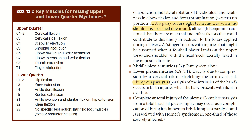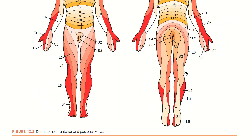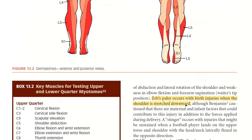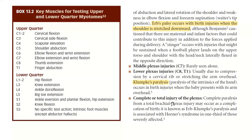Remember, if it is a lower plexus injury, it is called Klumpke's paralysis. The lower plexus injury involves C8 and T1, while the upper plexus injury involves C5 and C6. When there is a complete injury, it is called Erb-Klumpke palsy or Erb-Klumpke paralysis.